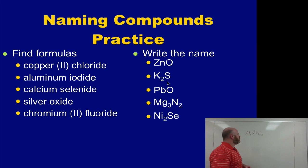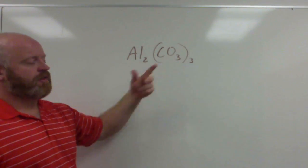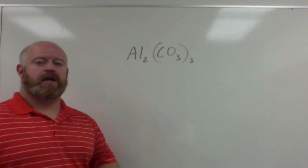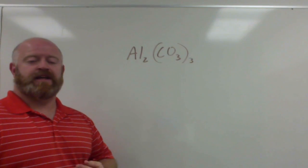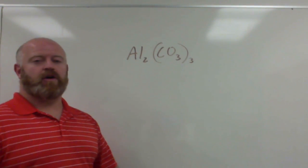So we're going to start with a compound like this. If we take a look at this, we have Al2(CO3)3. It looks much more complex at first glance, and you might say, how do I deal with all this stuff over here? What do I call that? How does it work?